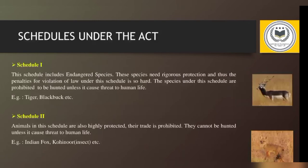Schedule One includes endangered species that need rigorous protection. Penalties for violating this schedule are very strict, and hunting of these species is prohibited unless they pose a threat to human life. Examples include tigers and blackbuck. Schedule Two is similar to Schedule One — species are highly protected, hunting and trade are prohibited except when posing threat to human life. Examples include the Indian fox and Kheenor, an insect.